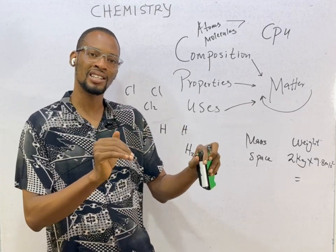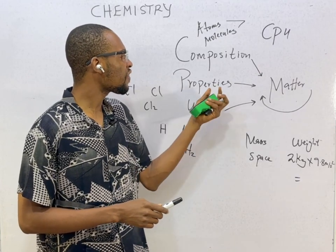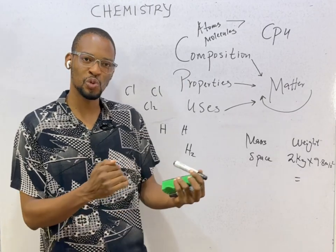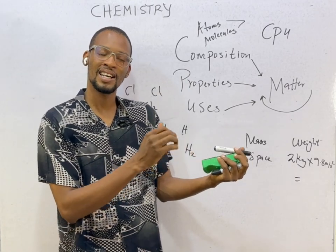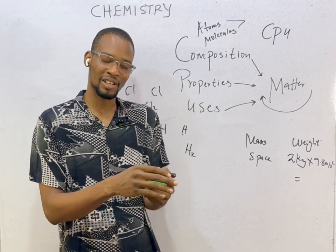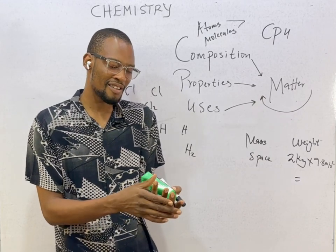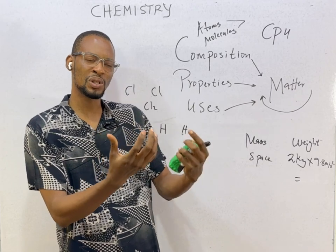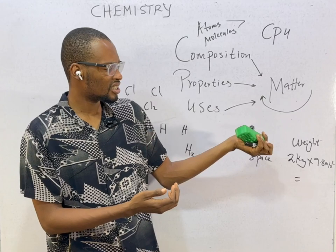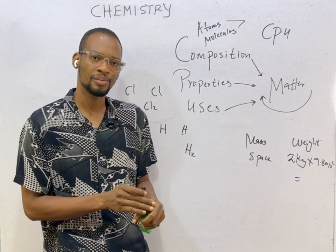The properties of matter can be divided into two: physical properties and chemical properties. Physical properties include mass, color, density, boiling point, and melting point — these are properties you can inspect by appearance. For example, water starts boiling at 100 degrees Celsius. These are all physical properties.